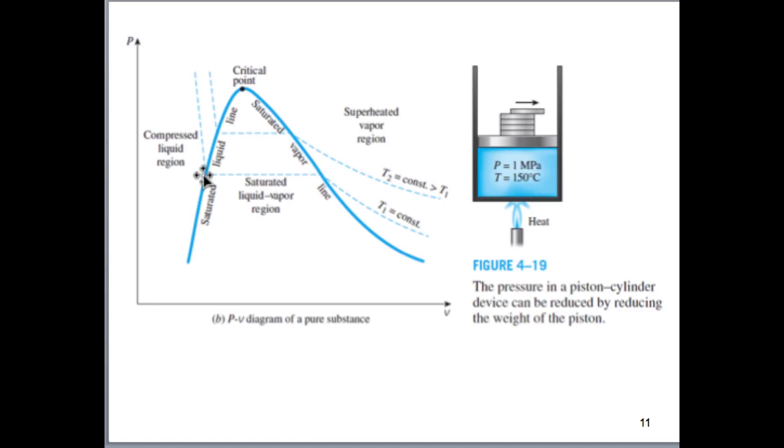And as we move along this line, we'll have a saturated liquid vapor. As we reach this point here, we'd have a saturated vapor. And as we continue to decrease the pressure, we then see that we have a superheated vapor in this region.